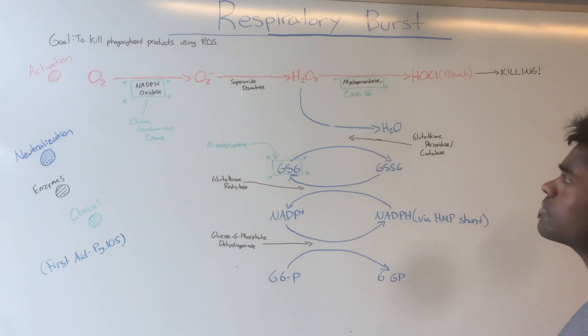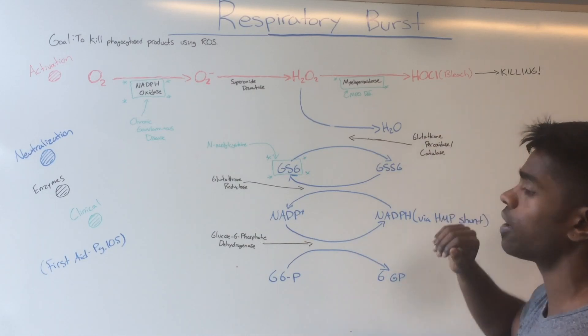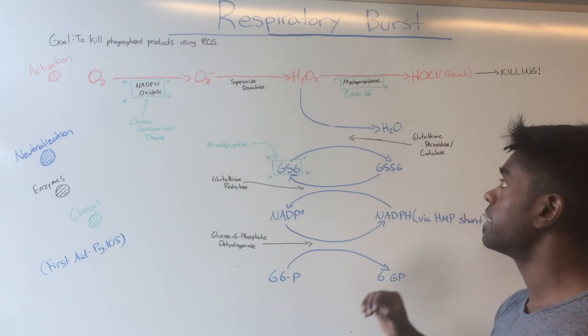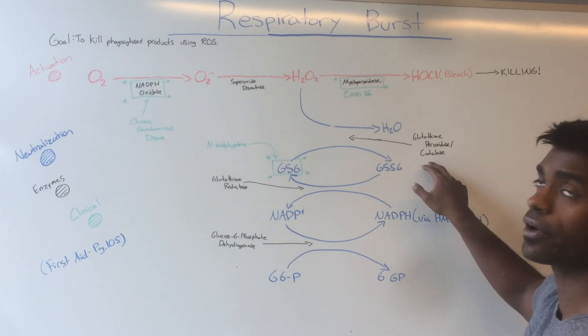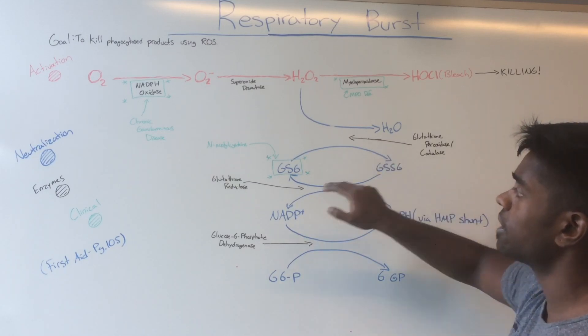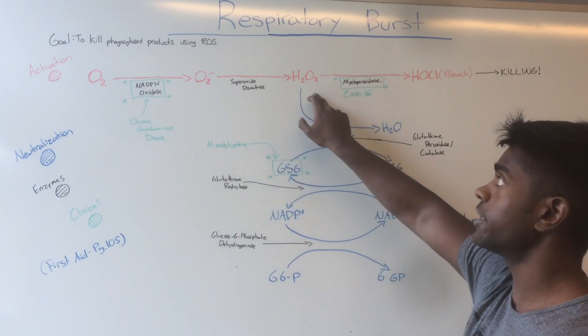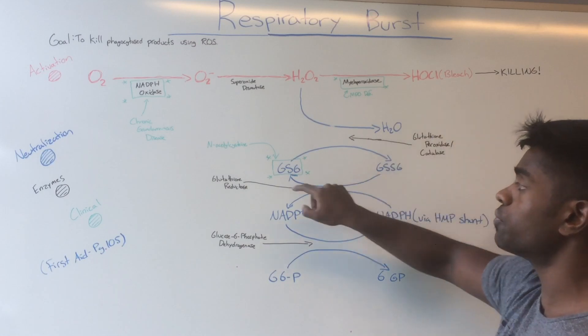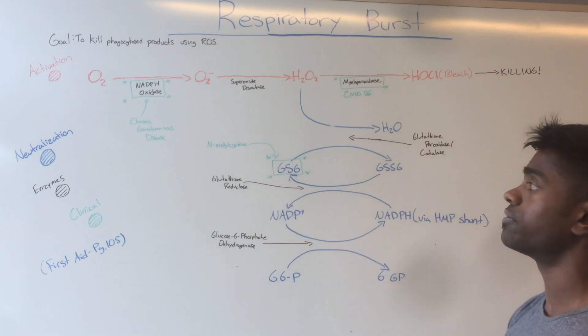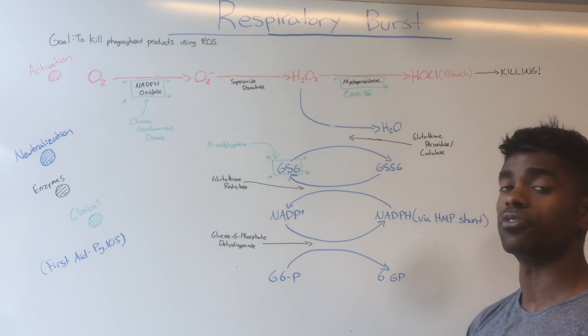The neutralization pathway, to avoid killing products when the cell doesn't need to, involves catalase, which is a very important enzyme. Catalase uses glutathione in its reduced form to convert H2O2 to H2O. You really need a lot of glutathione present to convert these free radicals into neutralized products.